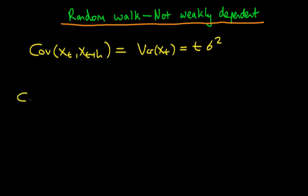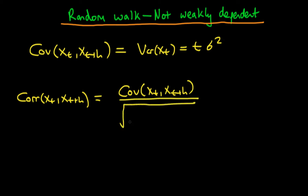Then we need to derive the correlation of xt with xt plus h. The correlation of xt with xt plus h is defined as the covariance of xt with xt plus h, all divided through by the square root of the variance of xt times the variance of xt plus h.